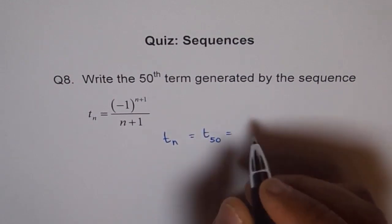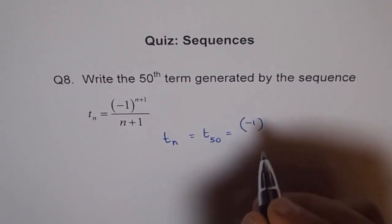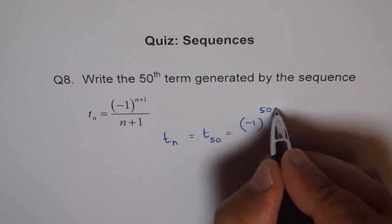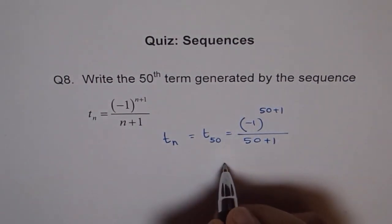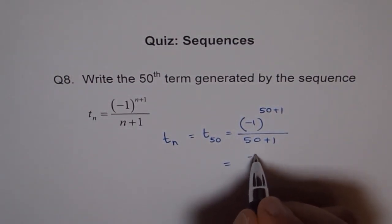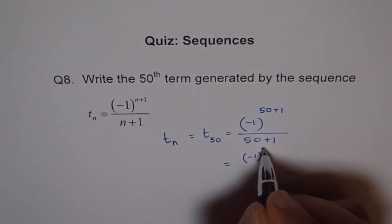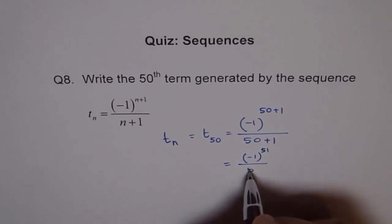T_50 equals to minus 1 to the power of 50 plus 1 divided by 50 plus 1. And therefore we get minus 1 to the power of 51 over 51.